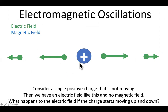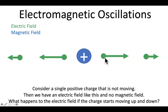Now, if the charge is fixed, we have the situation we dealt with in the first section of the course. The electric field points directly away, so it's horizontal at these locations. And since there's no currents anywhere, the magnetic field is zero.